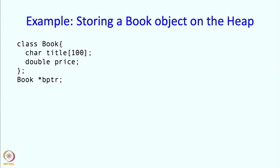So I can declare BPTR to be a pointer to a book object. Right now BPTR does not contain a value — I am just defining that variable. Now here I am assigning a value to BPTR, and this is a new statement. So this says BPTR equal to new book.